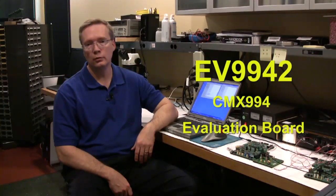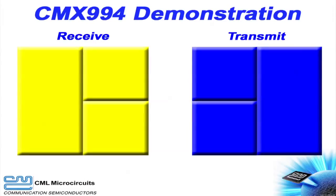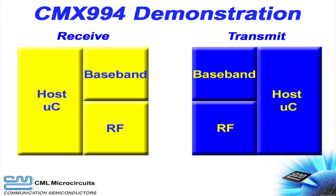The EV9942 is the evaluation board for the CMX994. In today's video, we will use the EV9942 and other CML evaluation boards to demonstrate a complete QAM data link. Our data link will consist of a transmit section and a receive section. Both transmit and receive sections consist of baseband, RF, and host controller.